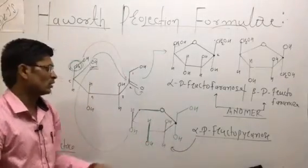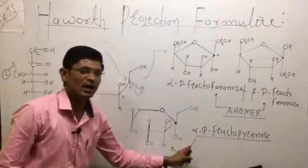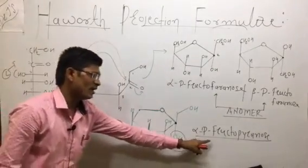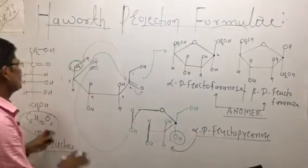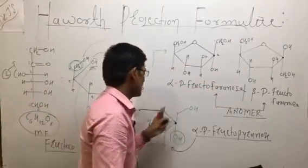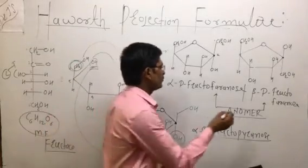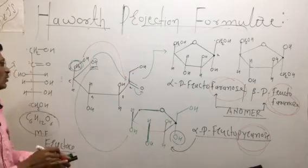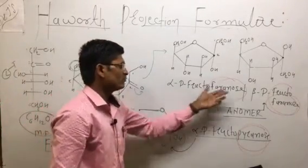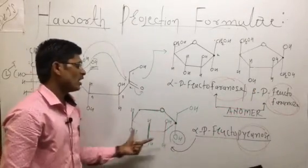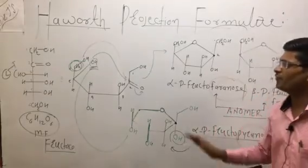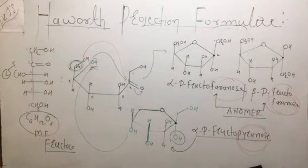So, this is Alpha D fructopyranose. So, these are the Haworth projection formulas of glucose and fructose molecules.